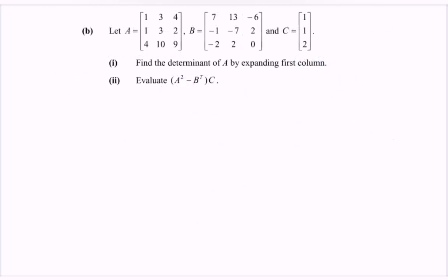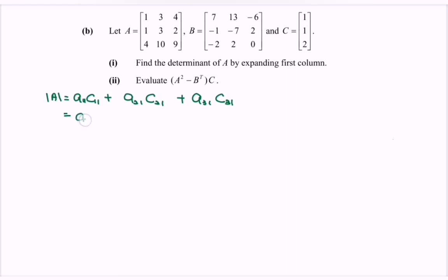Next, we have part B. Let A be a 3x3 matrix, B a 3x3 matrix, and C a 3x1 matrix. Find the determinant of A by expanding the first column. So the determinant of A equals A11·C11 plus A21·C21 plus A31·C31. Converting to minors: positive A11·M11 minus A21·M21 plus A31·M31.